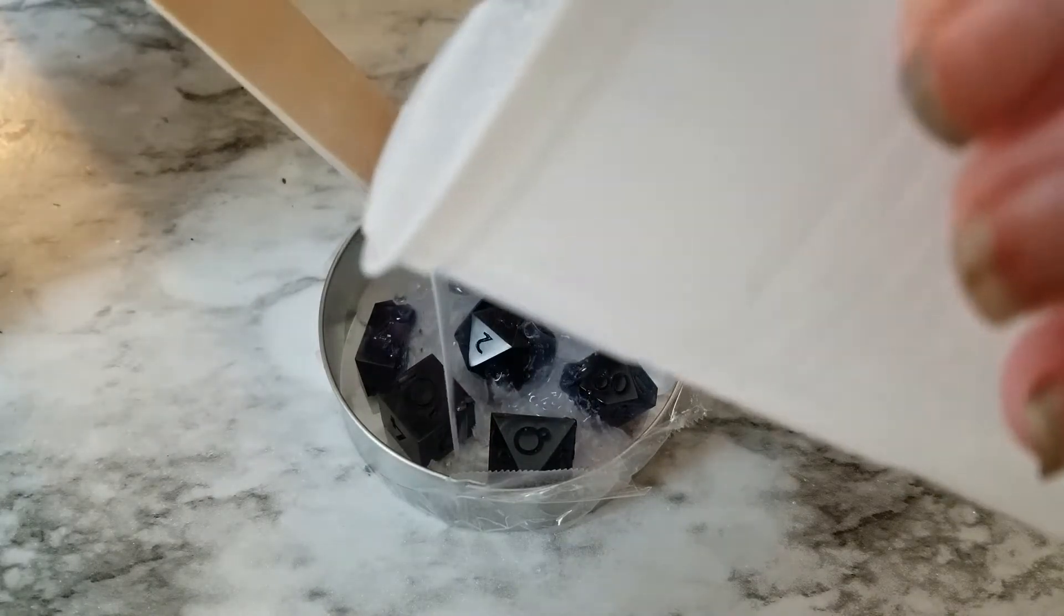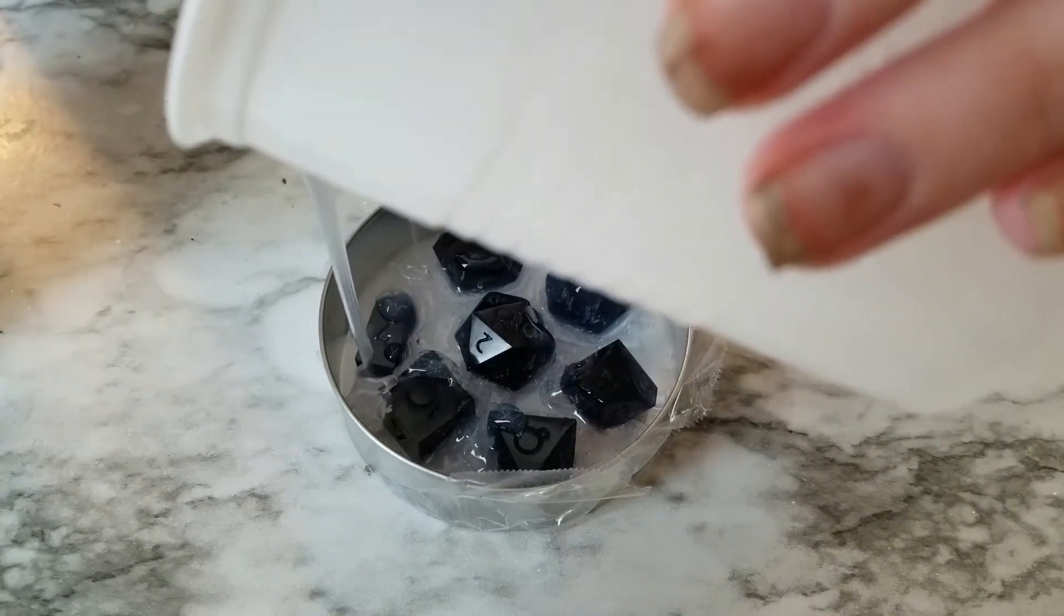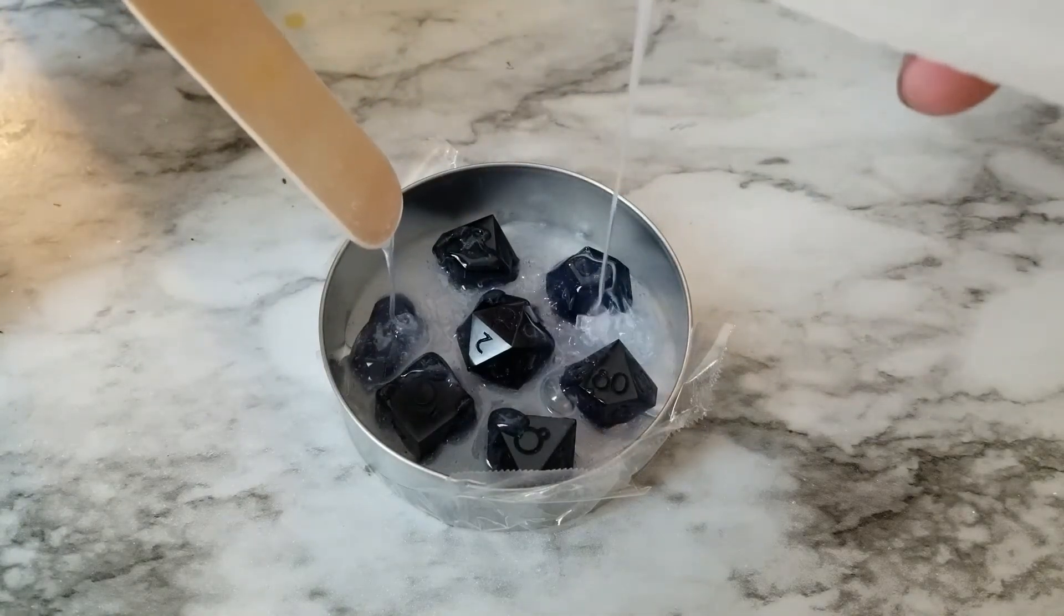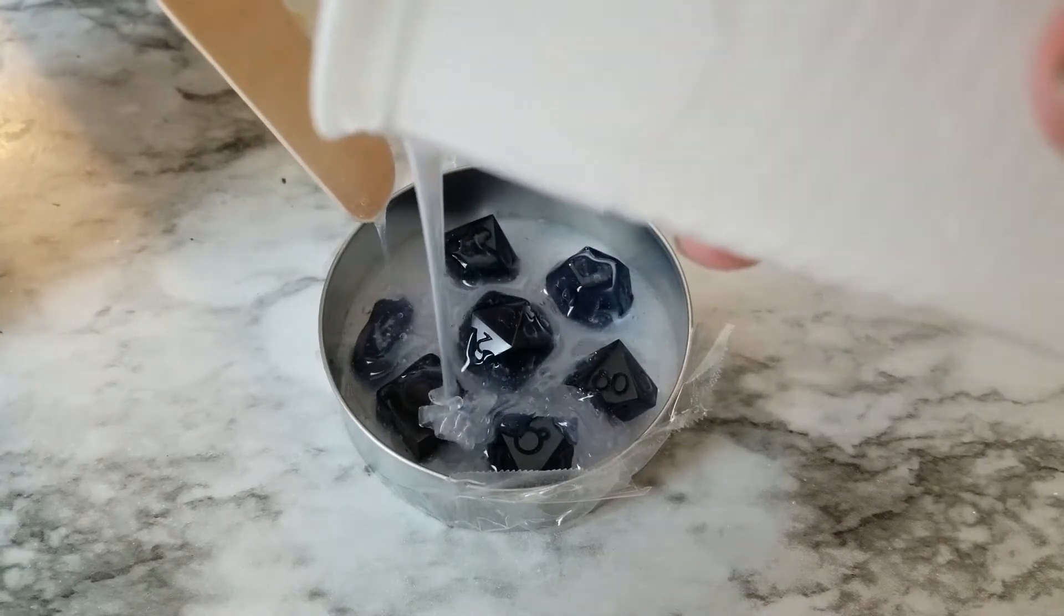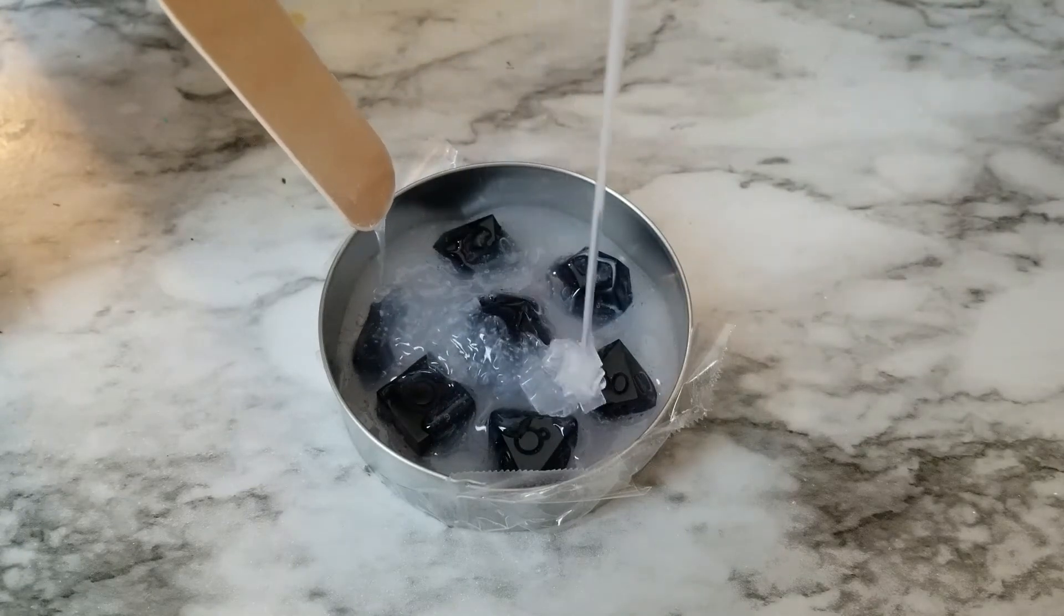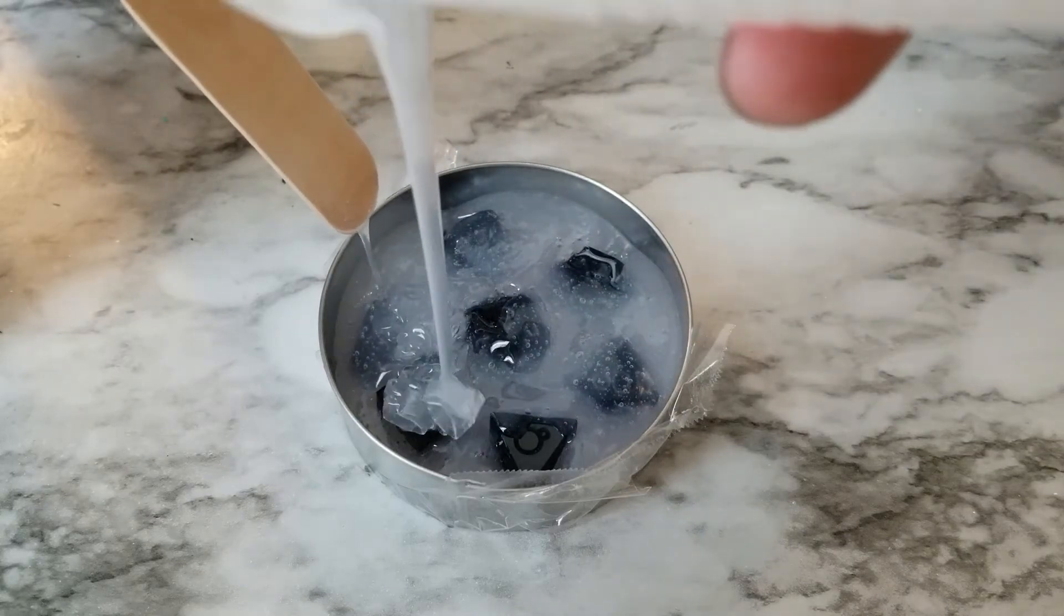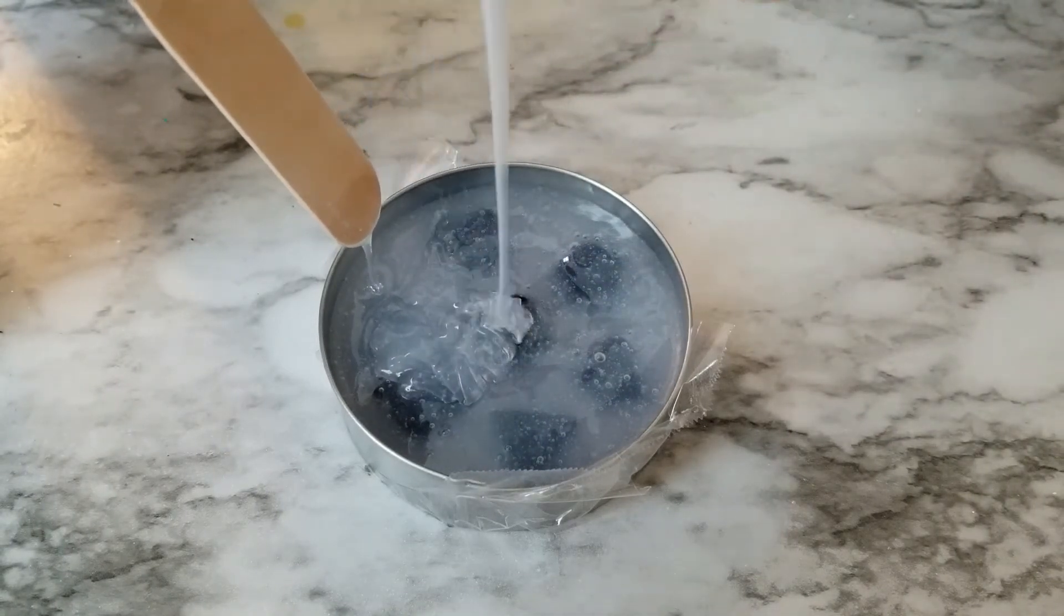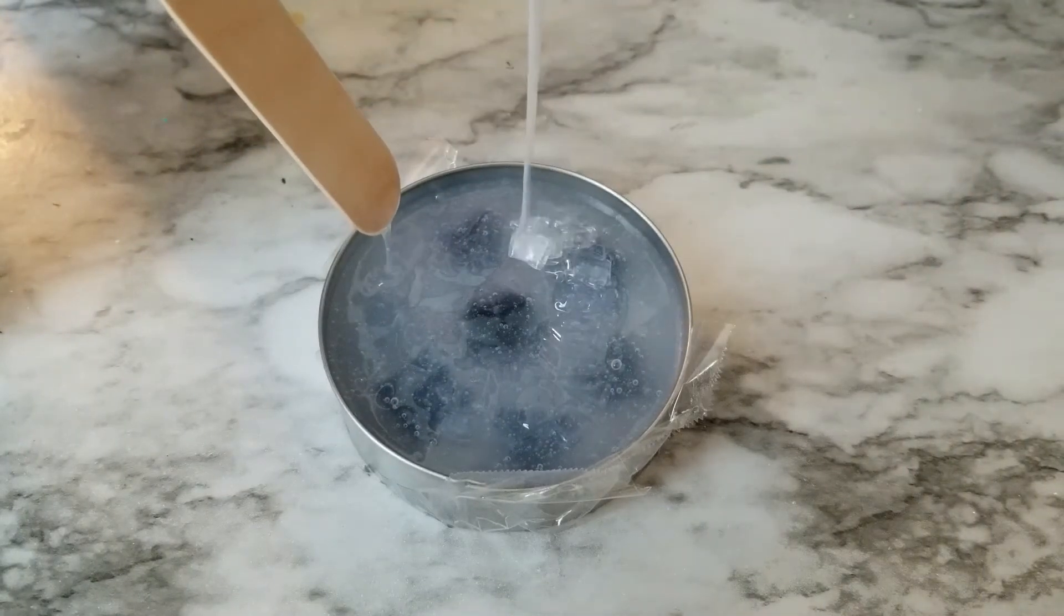When I pour my silicone into my mold, if I was using a slower curing silicone I would do this a lot slower than what I am doing. I still try to pour in a thin stream, but I just try to make sure that I pour it in all the little spaces so I don't have pockets of places that don't have silicone in them. I'm not really too worried about all the bubbles because I'm just going to throw this in my pressure pot and that's going to take care of the bubbles for me.